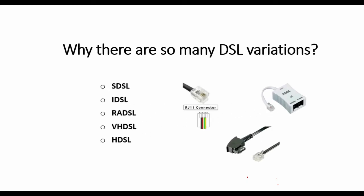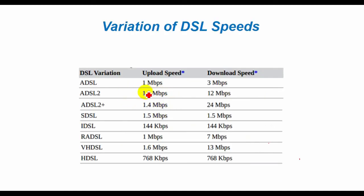Why are there so many DSL variations? The answer is quite simply that each type of DSL is aimed at a different user, business, or application. Businesses with high bandwidth needs are more likely to choose a symmetric form of DSL, whereas home offices choose an option that enables full line sharing at the expense of bandwidth. In addition, some of the DSL variants are older technologies. For this reason, DSL names change slightly.